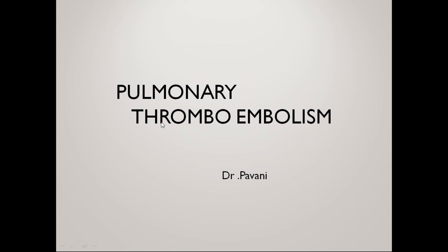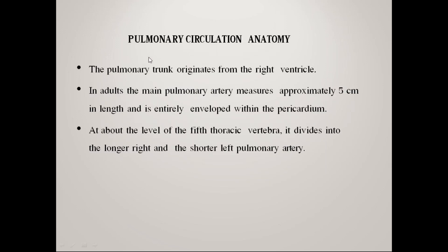Today's class is about pulmonary thrombo-embolism. First, we have to know about the pulmonary circulation. The pulmonary trunk takes origin from the right ventricle, and in adults the main pulmonary artery measures approximately 5 cm in length and is entirely enveloped within the pericardium. At about the level of the 5th thoracic vertebra it divides into the longer right and shorter left pulmonary artery.